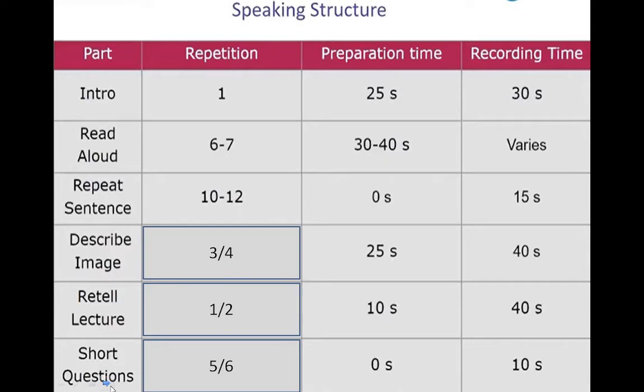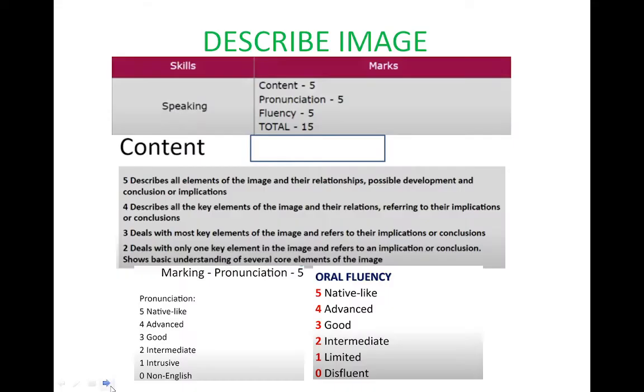On the screen, the speaking structure of PTE is given. There are basically five types of questions that you are going to get in the exam and describe image is the third question. The total number of describe image questions in the exam are three to four. You will have 25 seconds of preparation time and 40 seconds of recording time. The marking criteria: one question is of 15 marks, three parameters are checked — content, pronunciation, and fluency — and each parameter is of 3 marks.